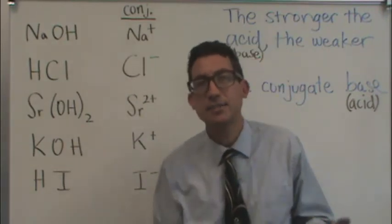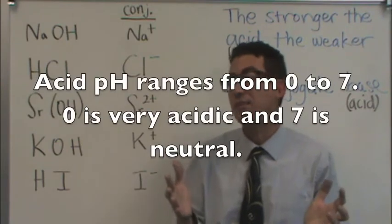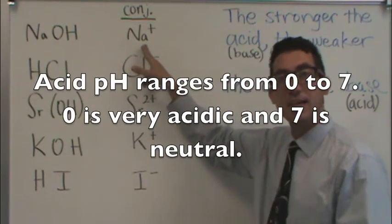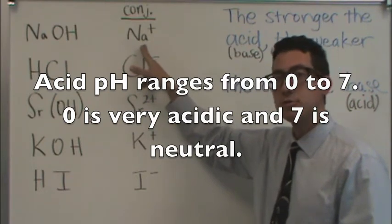Well, what's the highest pH that an acid could have? Well, in this case, the highest pH that an acid could have is 7. What does 7 mean? It's actually neutral.